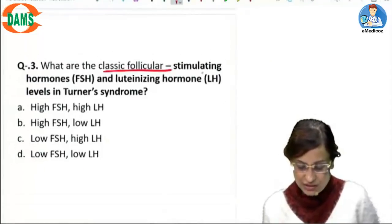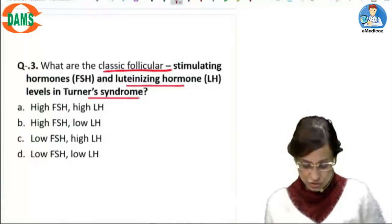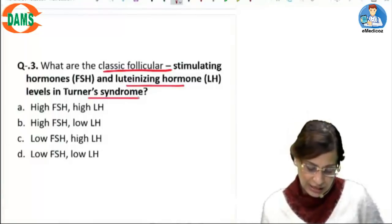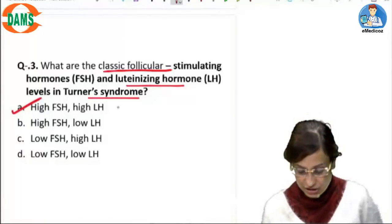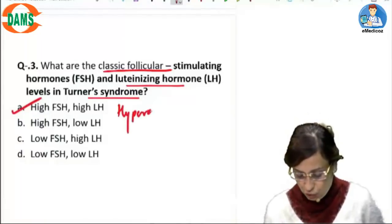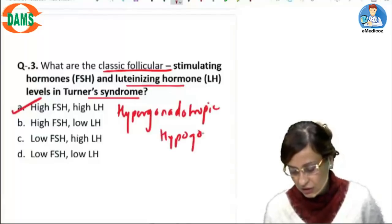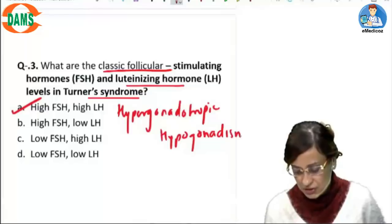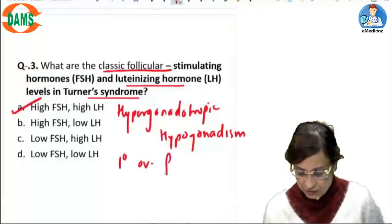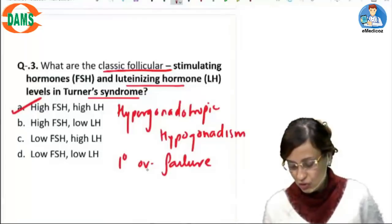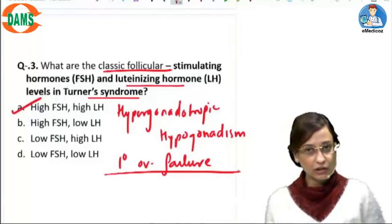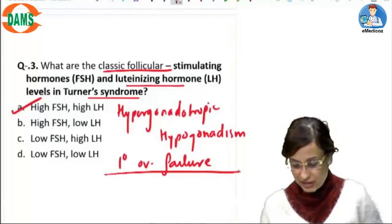Then the next question says, what are the classic follicular FSH and LH levels in Turner's syndrome? So Turner's will have high FSH and high LH. It is hypergonadotropic hypogonadism. So there is no feedback by the ovarian hormones. So the LH and FSH levels are high.